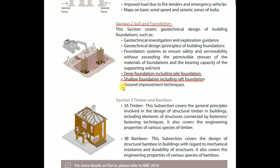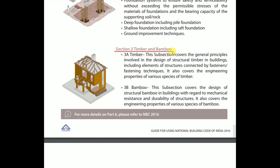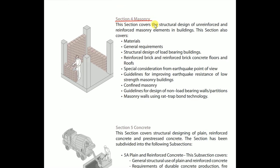Section 3 covers timber and bamboo. Subsection 3A on timber covers the general principles involved in design of structural timber in buildings, including elements of structures connected by fasteners, fastening techniques, and the engineering properties of various species of timber. Subsection 3B on bamboo covers the design of structural bamboo in buildings with regard to mechanical resistance and durability, and also covers the engineering properties of various species of bamboo.